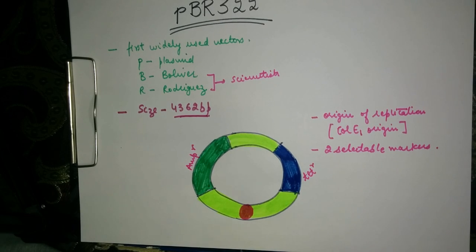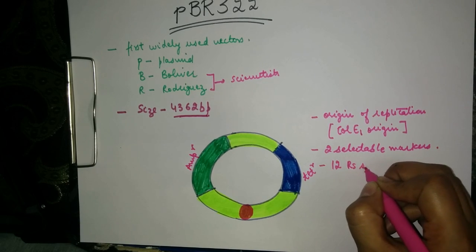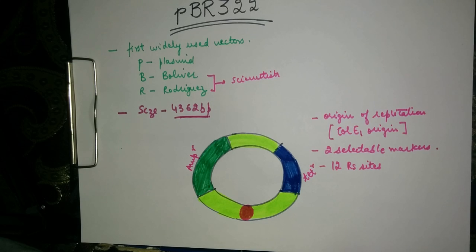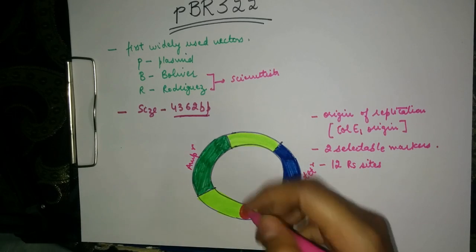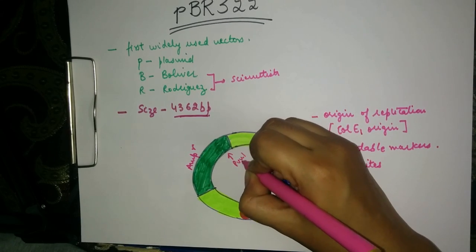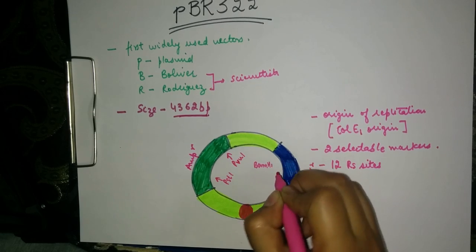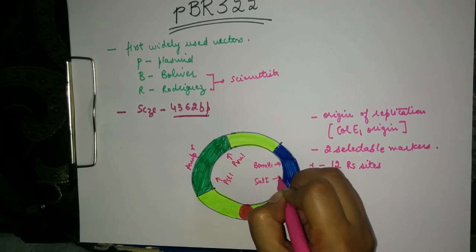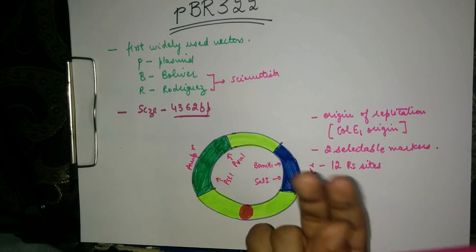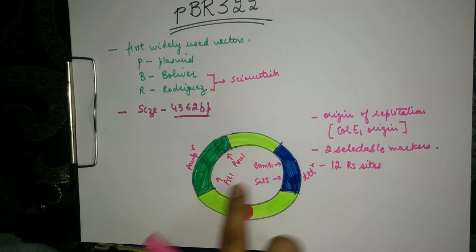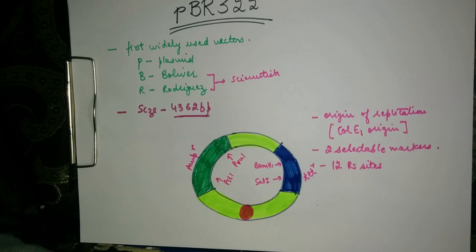There are unique restriction sites for 12 different restriction enzymes. Out of these 12 restriction sites, four are present inside the two selectable marker regions: PVU1 and PST1 in the ampicillin resistant gene, and BAMH1 and SAL1 in the tetracycline resistant gene. These four enzymes will make a cut at their specific recognition region, and into that cut we will insert our DNA.